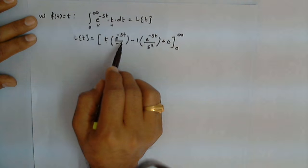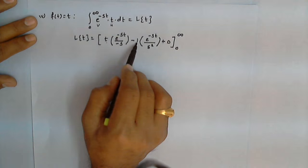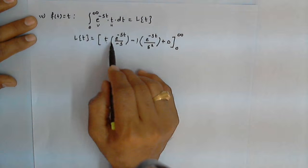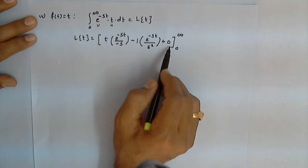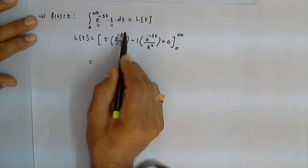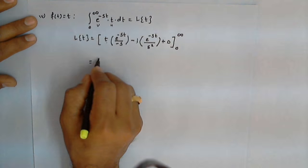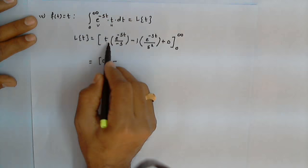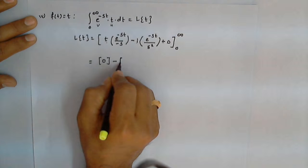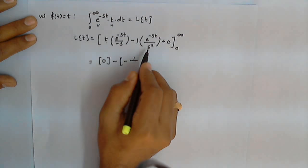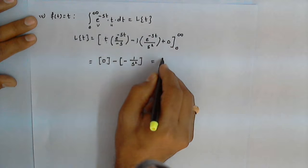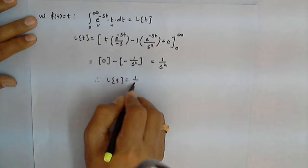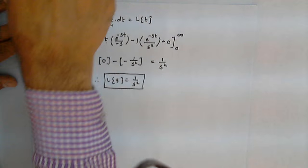For the upper limit, because e raised to minus infinity goes to 0, the entire bracket is 0. For the lower limit, we put t equal to 0: the first term is 0 (since t equals 0), and the second term gives e raised to 0 upon s squared, which is 1 upon s squared. After simplifying, we get 1 over s squared. Therefore, the Laplace transform of t is 1 over s squared.